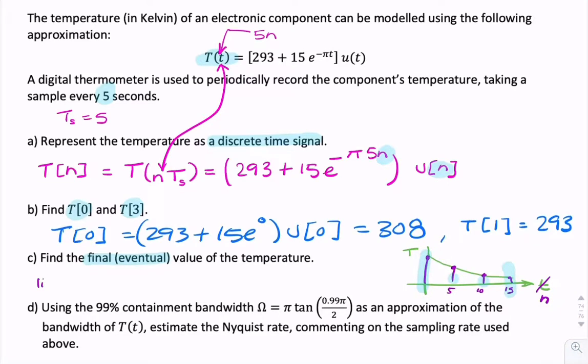So if you like, it's the limit as n becomes very big of T of n. And you can see, because we've got this term here, it's e to the power minus n. And e to the power minus n will approach 0 as n approaches infinity. So we'll end up with 293 plus 0. So it's just 293. We've already seen that the value there is 293. Why do we have a 1 there? That should be 3.